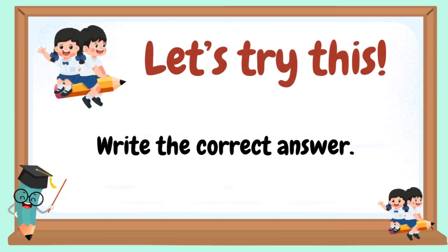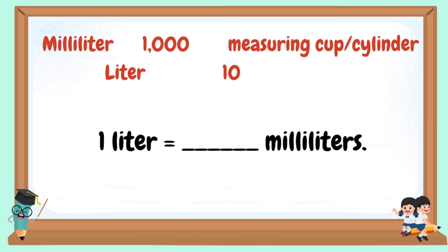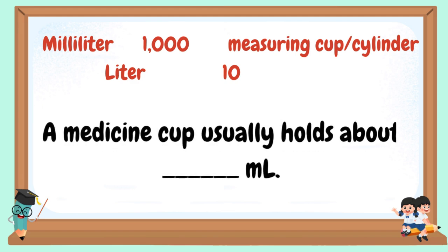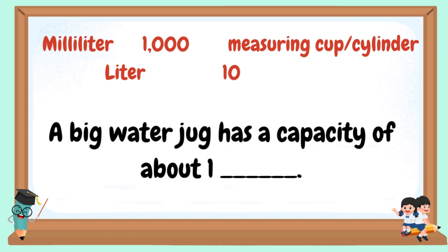Let's try this. Write the correct answer. The standard unit for measuring small amounts of liquid is blank. One liter is equal to blank milliliters. A medicine cap usually holds about blank milliliters. We use a blank to measure milliliters exactly. A big water jug has a capacity of about one blank.